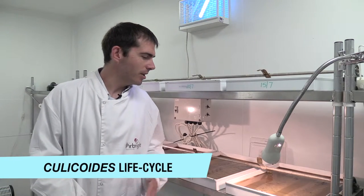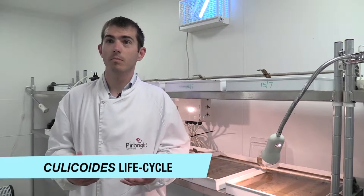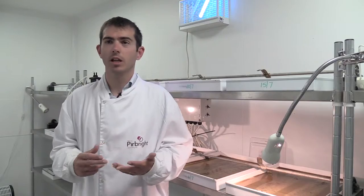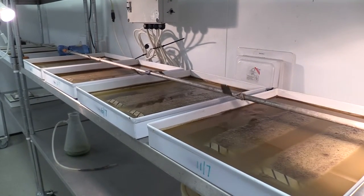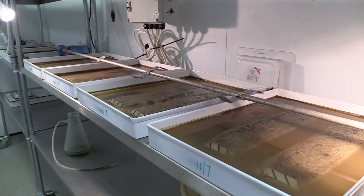So behind me you can see the rearing pans. Culicoides typically breed in damp organic matter, so whether it's animal dung, leaf mold. We represent this by having this lovely concoction of liver powder and wheat germ seeded with bacteria that the larvae can breed in.